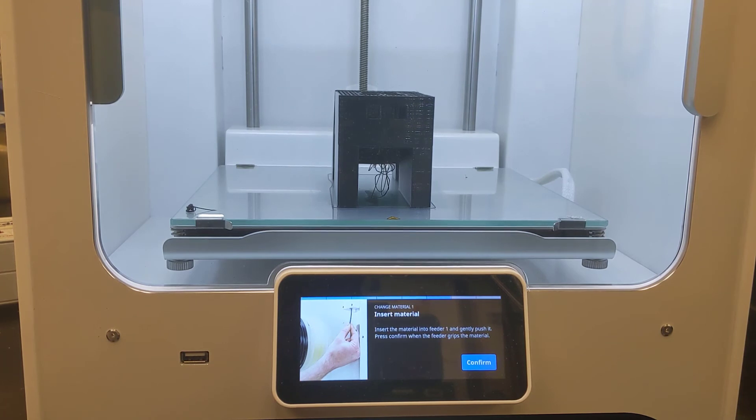Now it says insert material, insert the material into feeder one, gently push it, press confirm when the feeder grips the material. So I've already walked you through that as well. That was feeding the material up through the motor housing and then re-engaging the clamp here. So I'm going to click confirm.